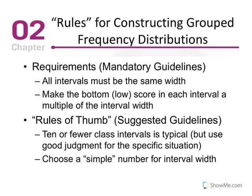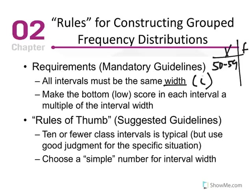When constructing group frequency distribution tables, we have to adhere to certain requirements. The mandatory guidelines are: all intervals must be the same width, and we use the notation of lowercase i as an illustration of width. We also need to make the bottom or low score in each interval — as shown in the interval of 50 to 59 — the lower limit of that class interval.